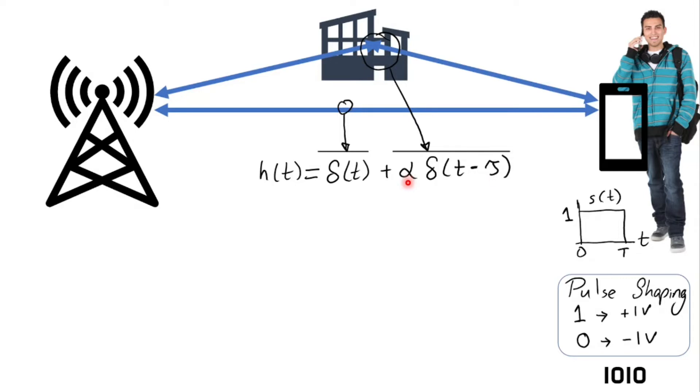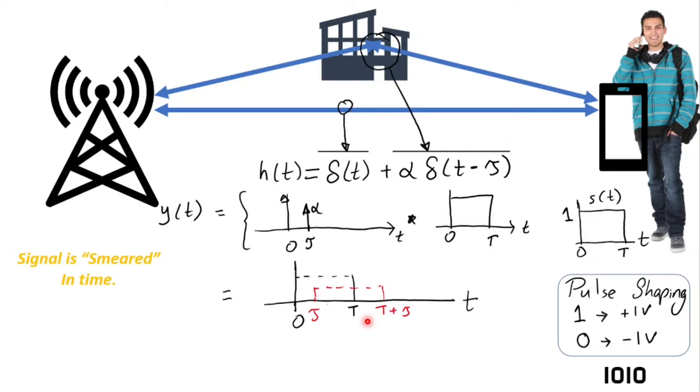The received signal at the access point is simply a convolution of S of t with H of t. And from the properties of delta function, S of t will have two copies from the two paths. The red copy is from the non-line of sight refracted path.